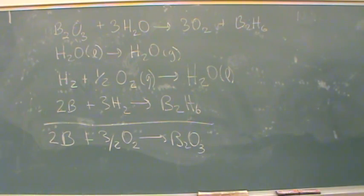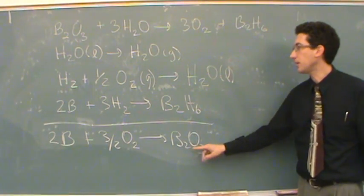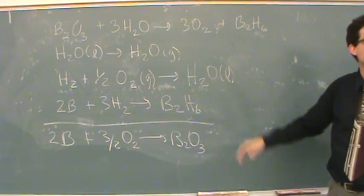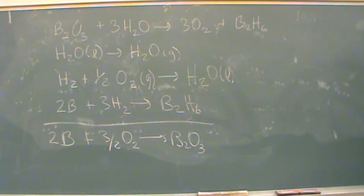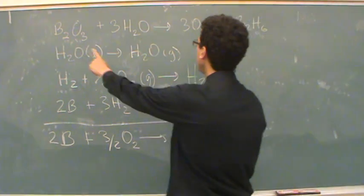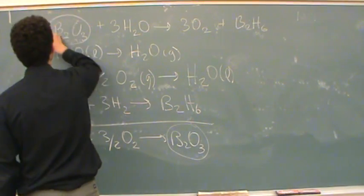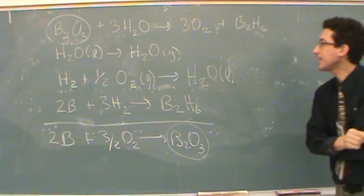So there's a couple things I would do. First thing I'm going to look for, what in my overall reaction appears only once up here? Do you guys see anything? B2O3 appears here and here, and I think that's it. Okay, that's worthy of a symbol. So I'll circle it. Okay, anything else?